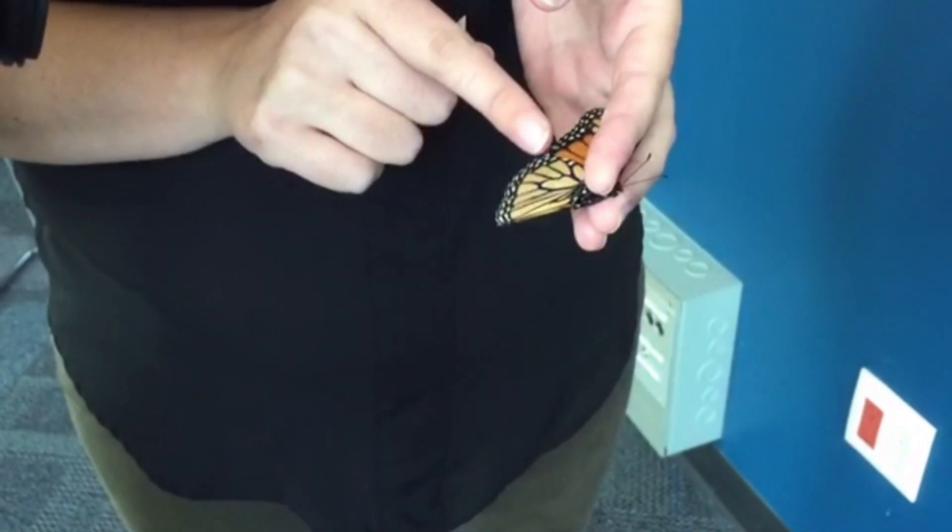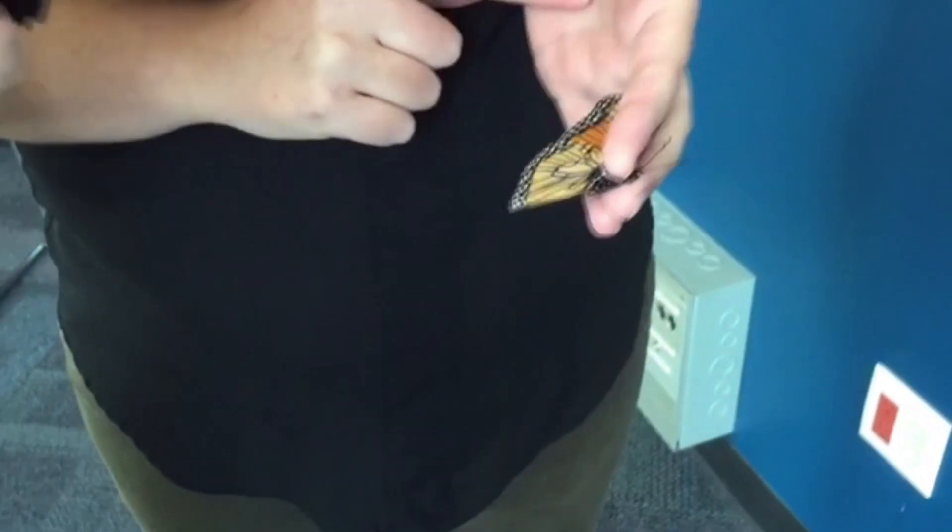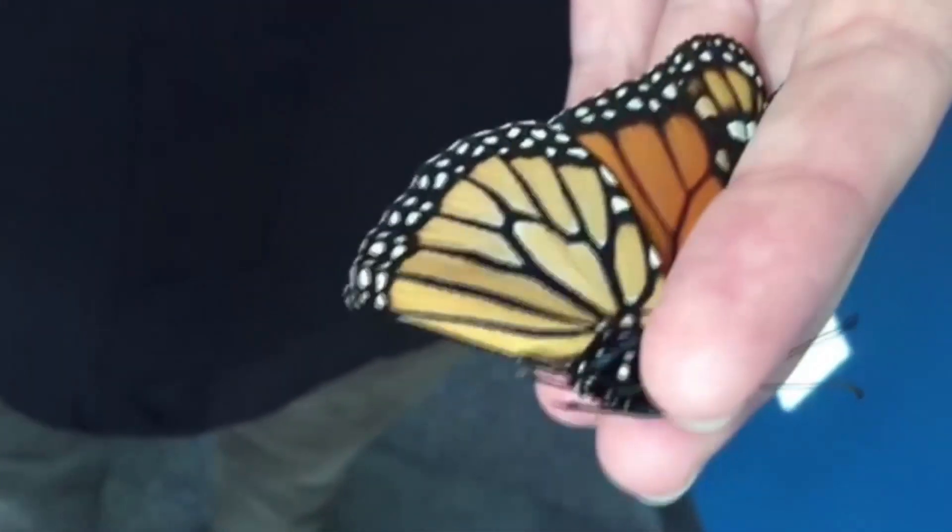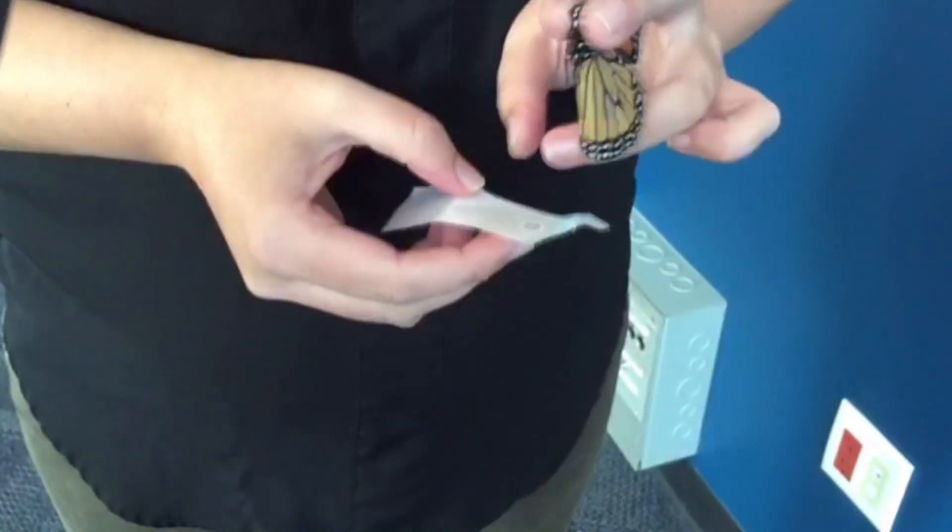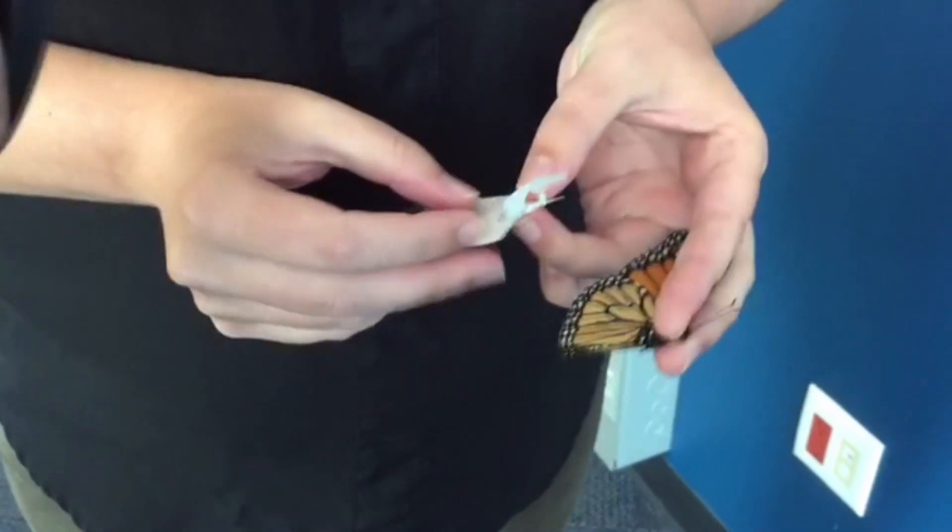is this mitten-shaped cell right here in the middle. It's called the discal cell, and we're going to stick the sticker right onto there. So I have my sticker here, and it's important that you try really hard to